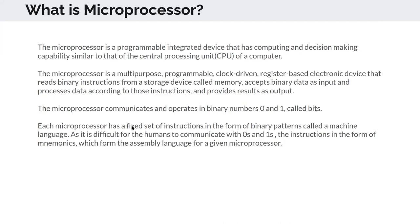There are many microprocessor manufacturers such as Zilog, Motorola, and Intel. Each company has its own microprocessor with its own instruction set. Since it is difficult for humans to communicate in zeros and ones, instructions in the form of mnemonics — which form the assembly language — are provided for each microprocessor.